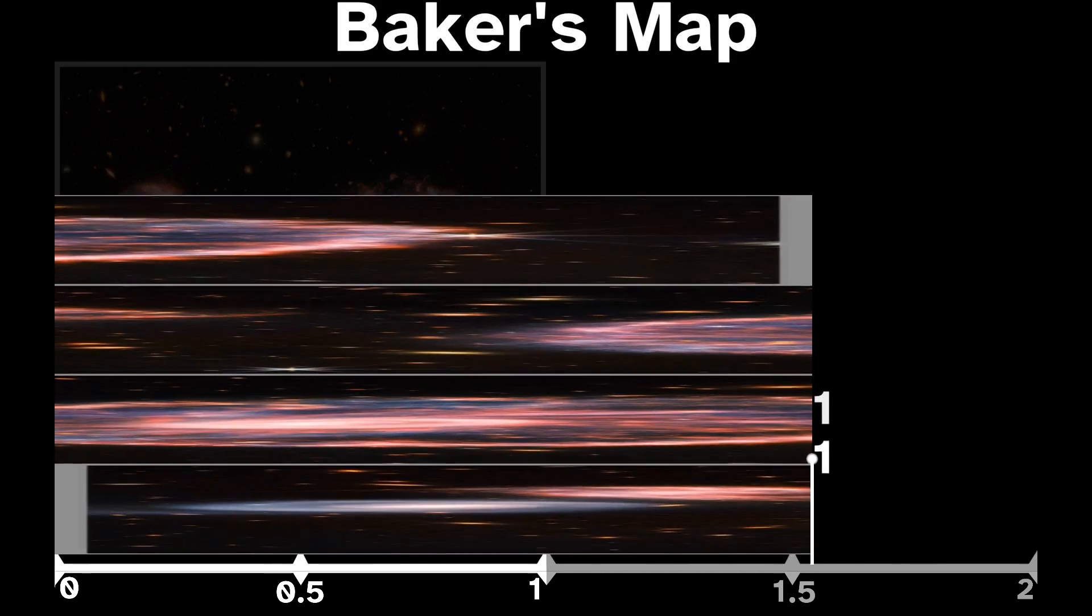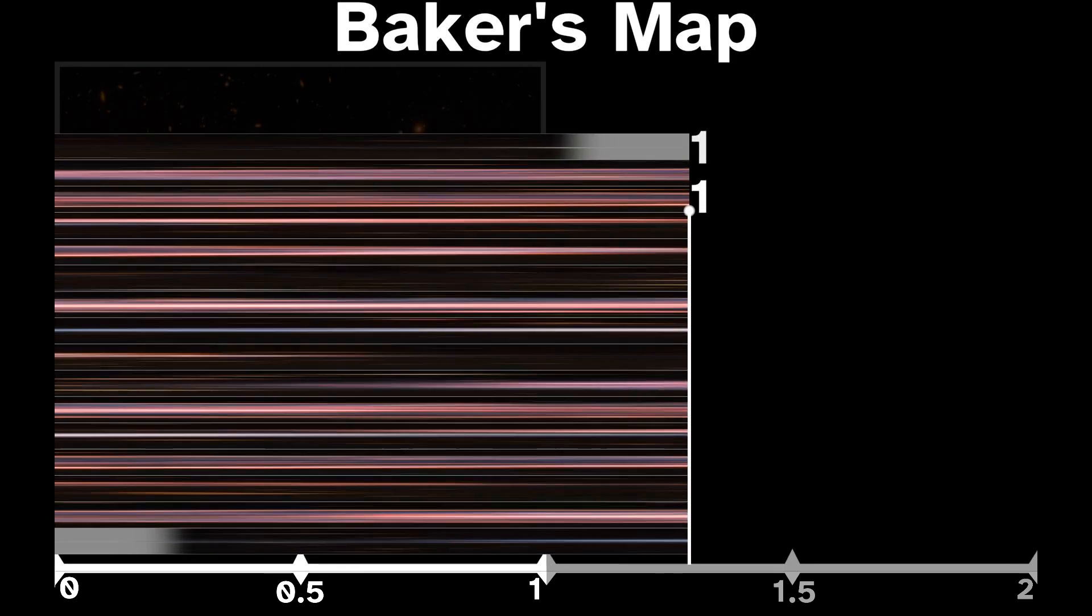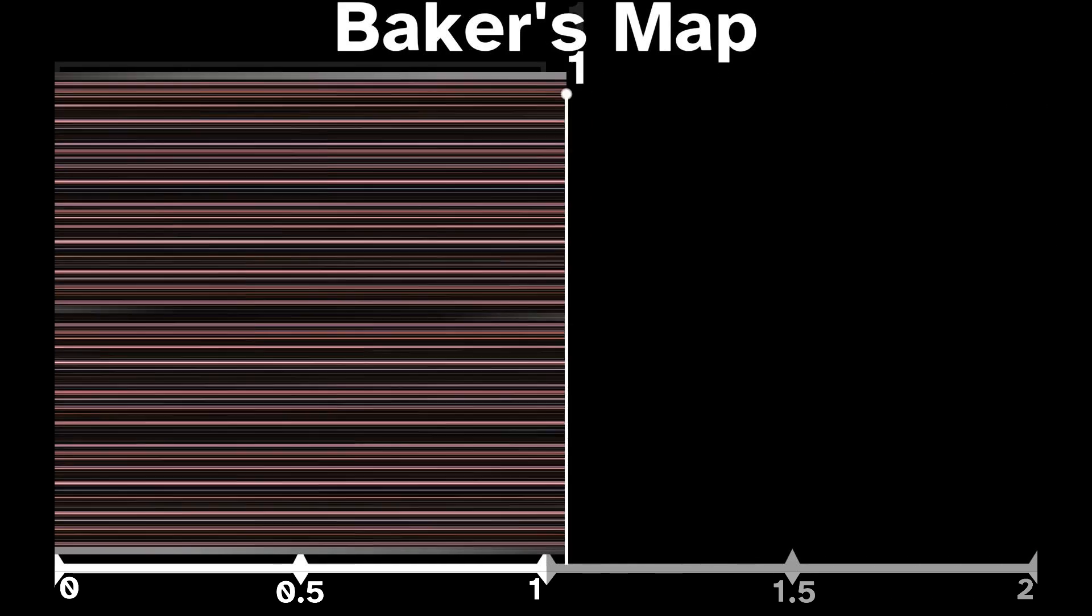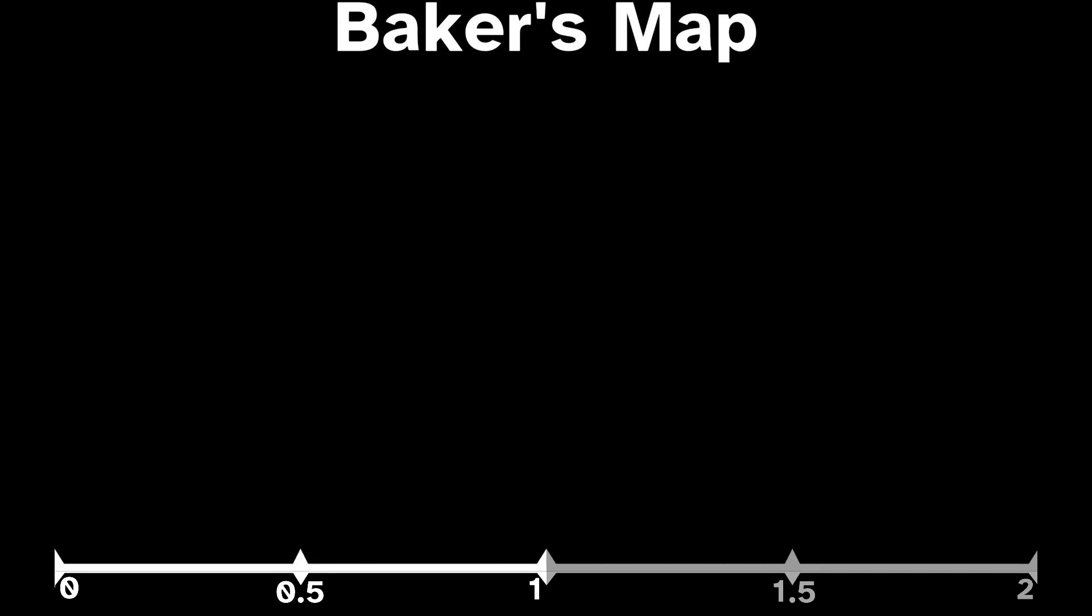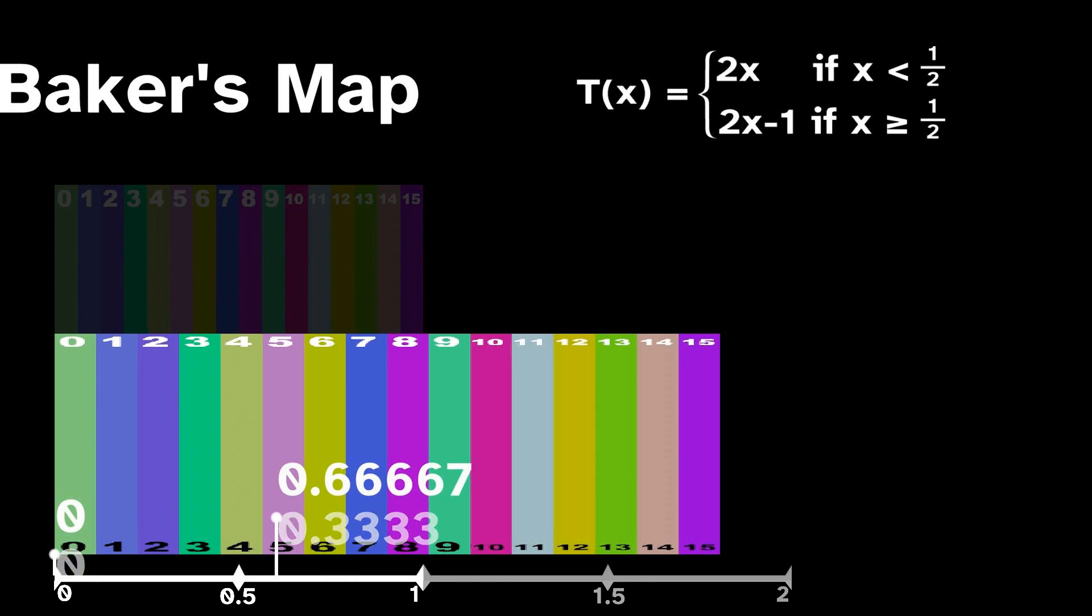This is called the baker's map because it's like stretching out a piece of bread dough, cutting it in half, and kneading the two pieces back together. We want to look at how points iterate on this map, so let's forget the y component and just think of this as a map from the x position to itself. We can pick an initial point, iterate this map on it, and see how it evolves.